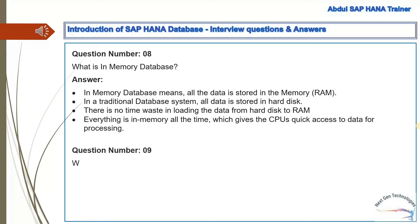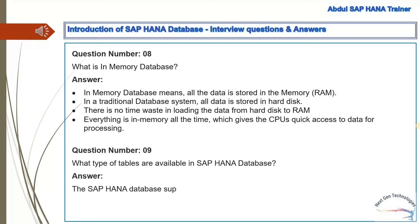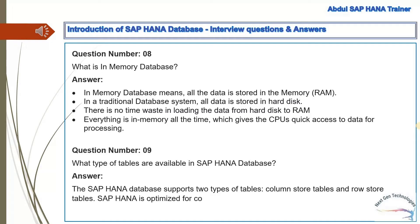Question 9: What types of tables are available in the SAP HANA database? Answer: The SAP HANA database supports two types of tables: column store tables and row store tables. SAP HANA is optimized for column storage and this is the default table type.